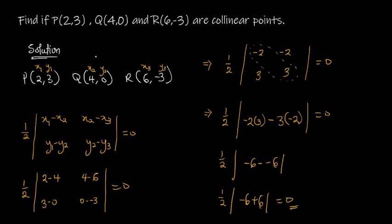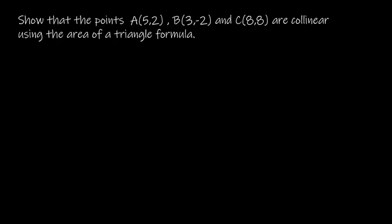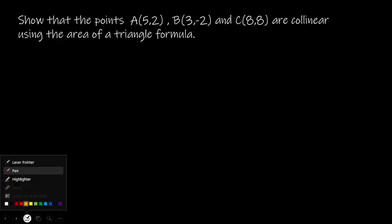Because after solving everything we get zero, it therefore means that the points P, Q, and R are collinear, since the area of the triangle is equal to zero. Let's look at another example to further understand what we are talking about.